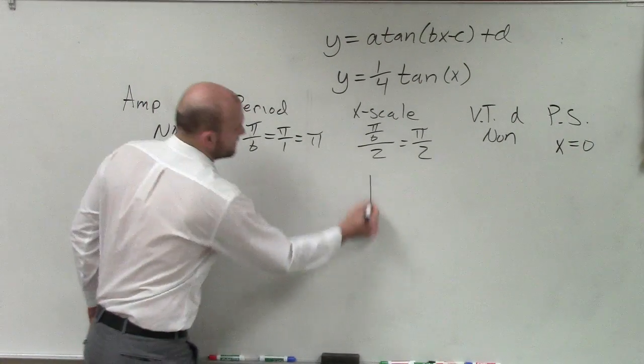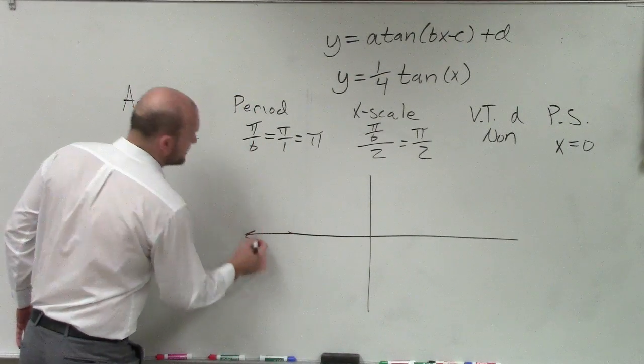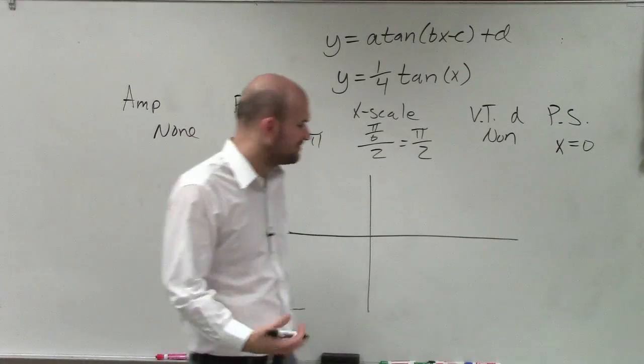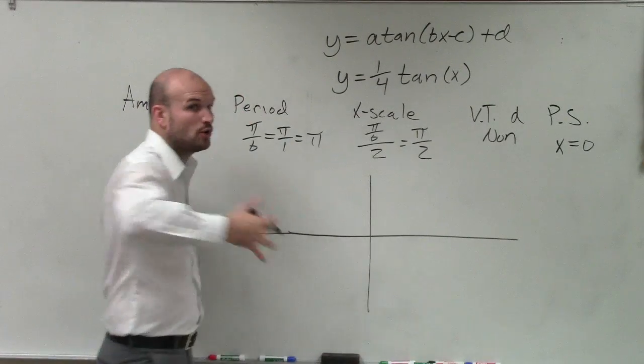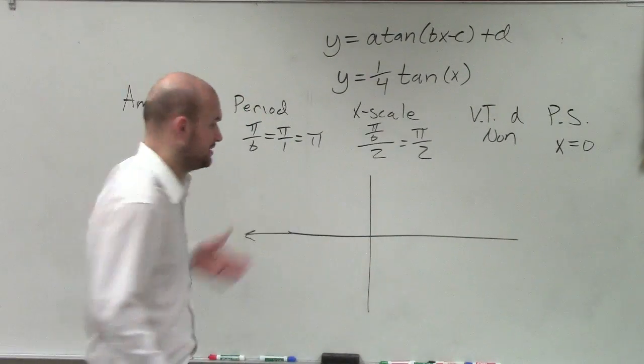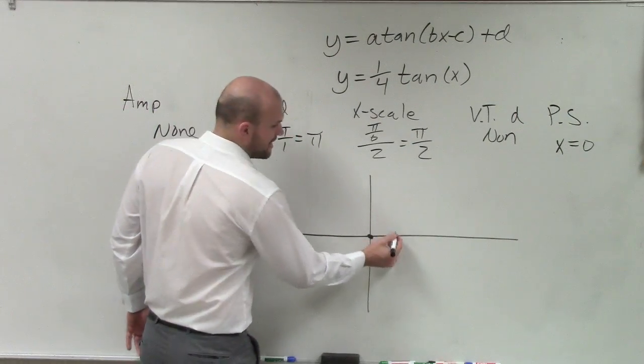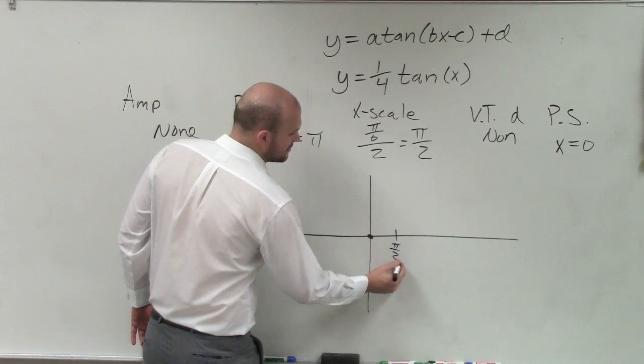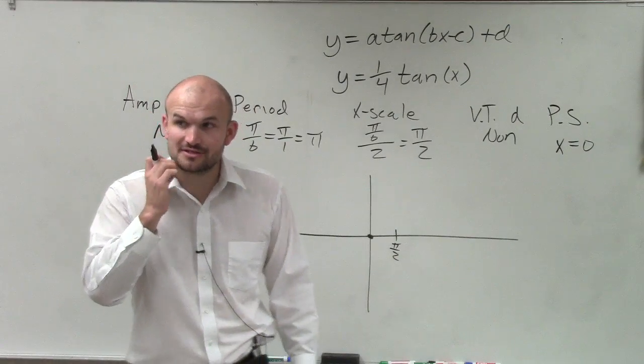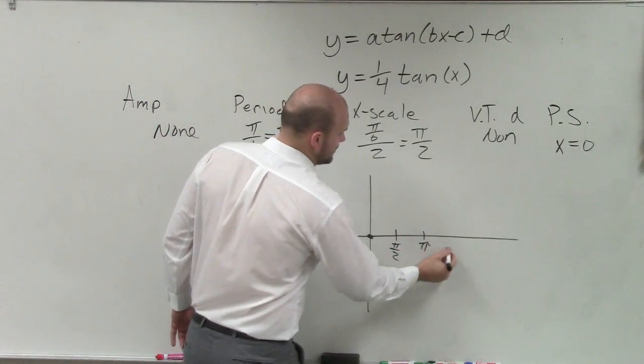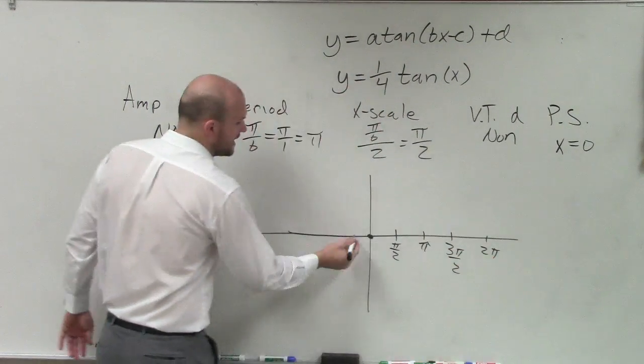So now we just need to go ahead and graph this. And to get an idea of this, we can actually go through some of these points and evaluate them. So my x scale is going to be π halves. That means every single important point is going to be π halves away from each other. So I'll start at 0, then the next one is π halves. So 2π halves, so π halves plus π halves is going to be π. Then we have 3π halves, and then we have 2π. And I'll go in the negative direction as well.